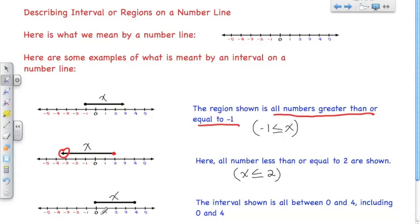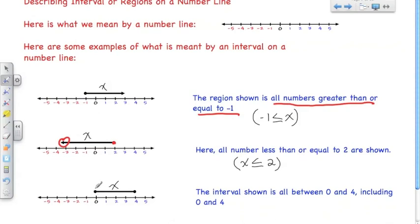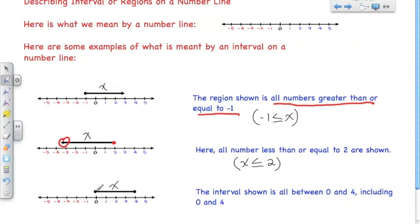This third example has two points and no arrows, meaning it's a bounded interval — it stops at both ends. X is greater than or equal to zero but less than or equal to four, so x is all numbers between zero and four. We represent that as 0 ≤ x ≤ 4, or equivalently: x is greater than or equal to zero and x is less than or equal to four.